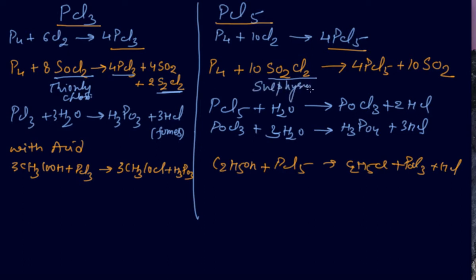Sulfuryl chloride gives us PCl5 and SO2. This is the confusion: SOCl2 gives you SO2 and S2Cl2, while SO2Cl2 gives you PCl5 and SO2.